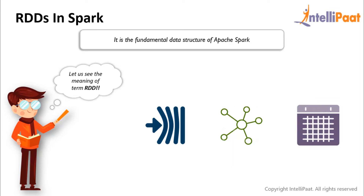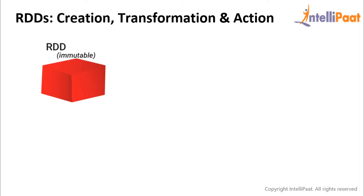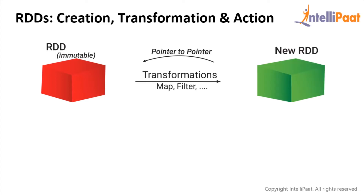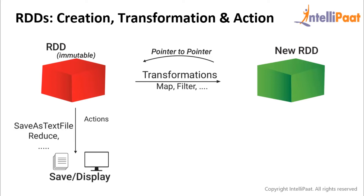Users can load the dataset externally, whether as a JSON file, CSV file, text file, or a database. RDDs are an immutable collection of objects — any attempt to change an RDD results in a whole new RDD. Consider an RDD on which you perform transformations like map, filter, and so on. This creates a whole new RDD but will not calculate anything. To calculate a result, you perform actions on the RDD like count or save as text file, which will display the result accordingly.